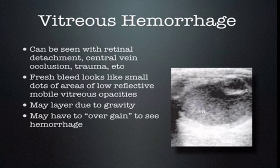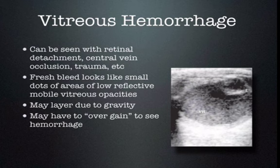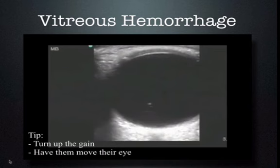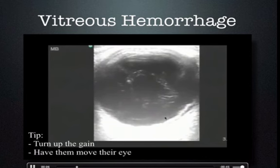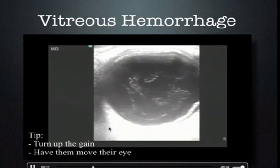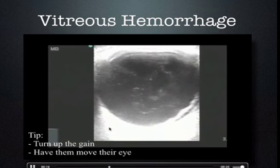Vitreous hemorrhage is also easy to see and can occur with many conditions such as retinal detachment, central retinal vein occlusion, trauma, etc. Fresh blood looks like small dots of low reflectivity and they're generally mobile. If you have the patient move their eyes from side to side, you'll get swirling of the blood in the vitreous — this is the 'washing machine sign.' It may also layer due to gravity. You may need to turn the gain up to really see it. Here we have a picture where, as we turn up the gain and have the patient move their eye, we see blood swirling — a vitreous hemorrhage due to a retinal detachment.